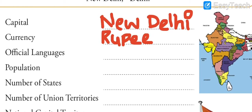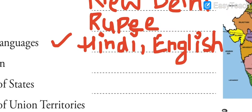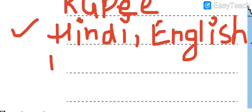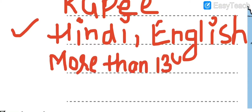Now, official languages. The official languages are two: one is Hindi and another is English. You must know both languages very well and feel proud to be an Indian. Now, population - how many people live in India? It's data given by the Government of India only, and the population of India at present is more than 134 crores.